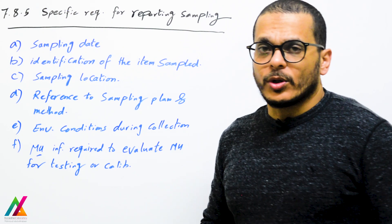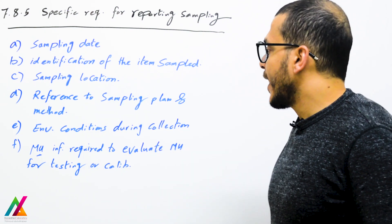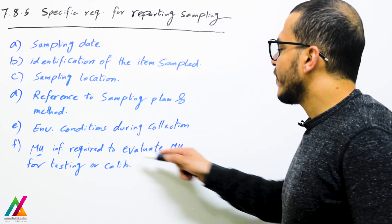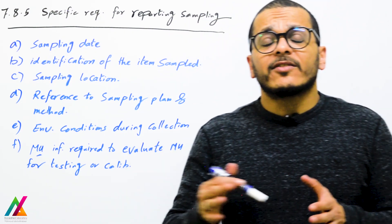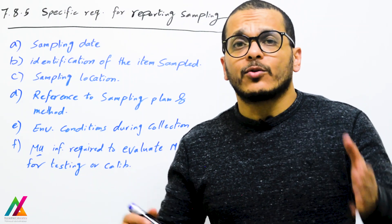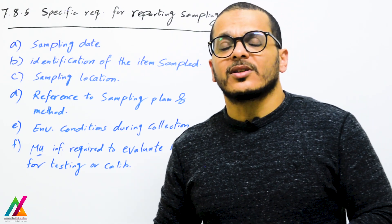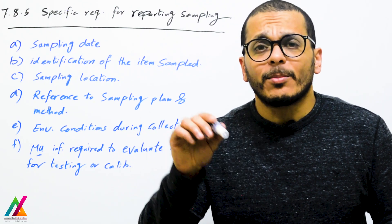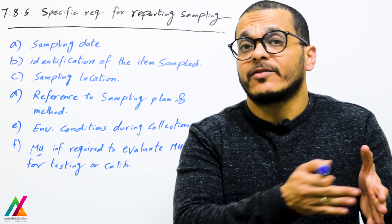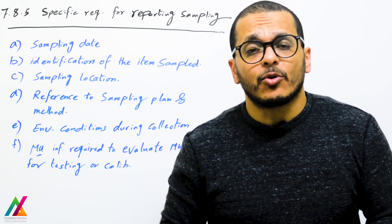If the lab is responsible for sampling, they shall have a report for collection of samples that shall include: sampling date; identification of items sampled; sampling location; reference to sampling plan and sampling method; environmental conditions during collection; and measurement uncertainty information required to evaluate measurement uncertainty. However, you don't need to add the sampling measurement uncertainty value directly to this report — you just quantify it and add it to the combined uncertainty.